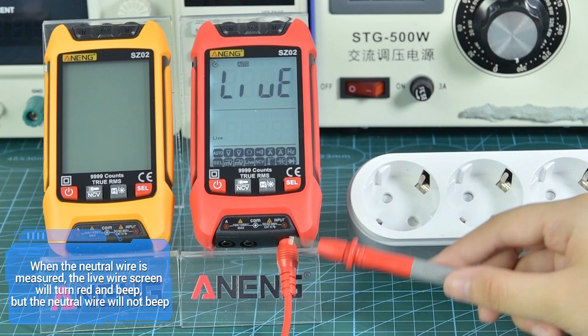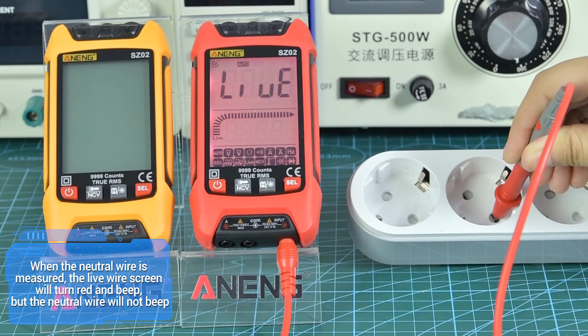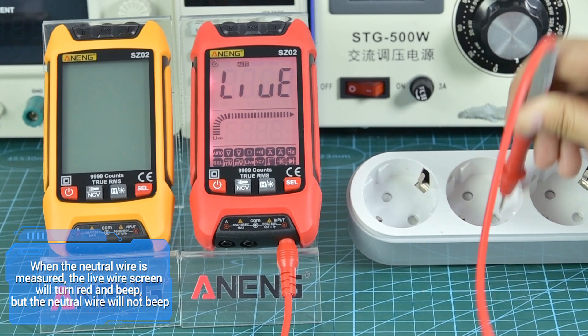When measuring the live wire, the screen will turn red and beep, but the neutral wire will not beep.